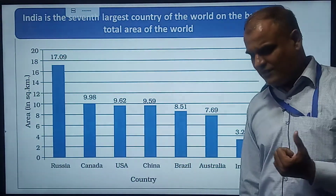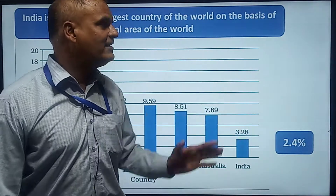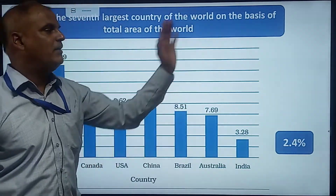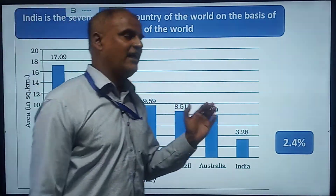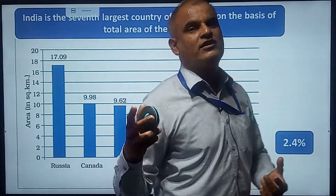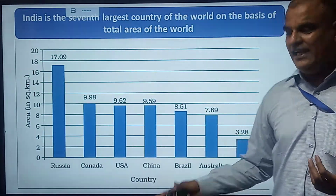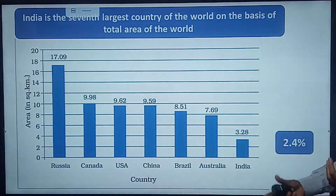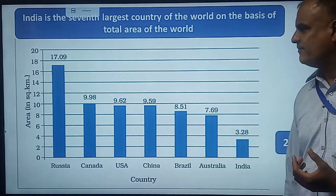India holds the 7th rank in the world on the basis of area. Russia holds the 1st rank. India covers 2.4% of the world's total land area.